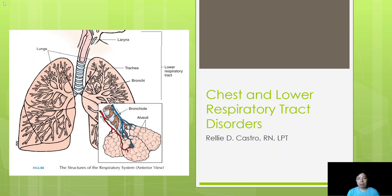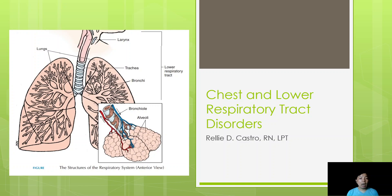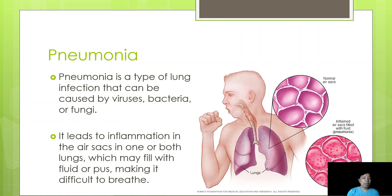Good day to all. For our final discussion about the respiratory system, let's now talk about chest and lower respiratory tract disorders. The lower respiratory tract is composed of your bronchi — the left and right bronchus — the trachea itself, your lungs, and of course the alveoli.